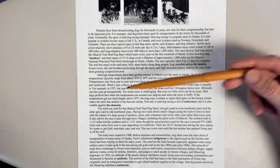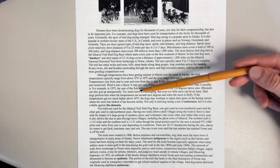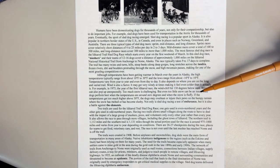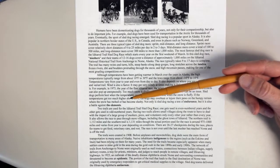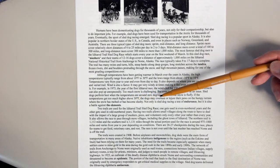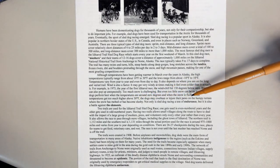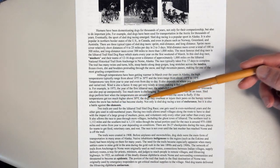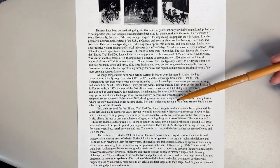Blizzards can also pop up unexpectedly. Too much snow is challenging, but even too little snow can be an issue. Sled dogs perform best when the temperatures are around zero degrees and when the snow is fluffy. If the temperatures get too much higher above 30 degrees, the dogs may overheat or injure their paws on the bumpy terrain where the snow has melted or has become slushy.